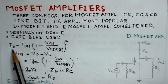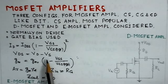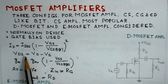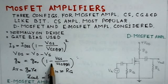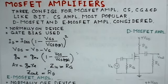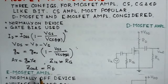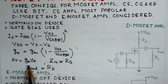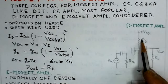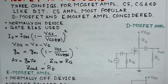From ID, we can determine VDS as VD minus VS. GM can be determined from ID using GM0·(1 minus VGS over VP). Once GM is known, the voltage gain of the amplifier is GM·RD. The input impedance Zin equals RG, and the output impedance Zout equals RD.